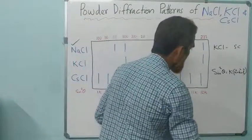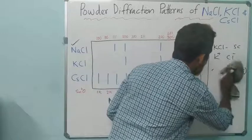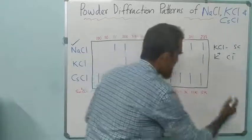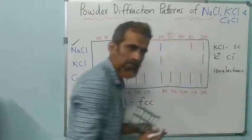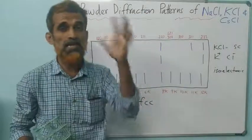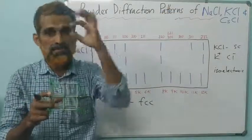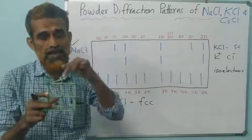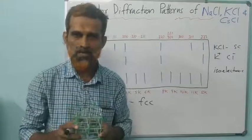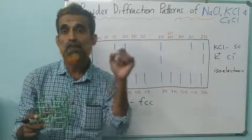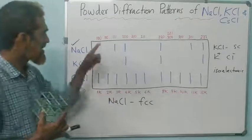This happens because in KCl the ions present — K⁺ and Cl⁻ — are isoelectronic. Isoelectronic means both ions contain the same number of electrons: both contain 18 electrons. And during X-ray diffraction, the scattering power of ions depends on their electron density. If both ions have the same number of electrons, they will show the same scattering power.